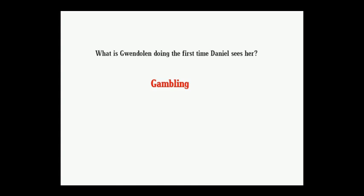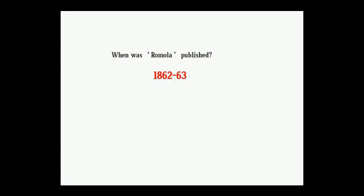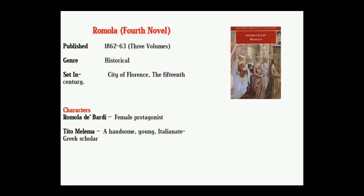Gwendolen is gambling when Daniel sees her. Next question: when was Romola published? Options: 1860–61, 1871–72, 1862–63, 1872–73. Correct answer: 1862–63. Romola is the fourth novel of George Eliot. It belongs to the genre of historical fiction and is set in the city of Florence.